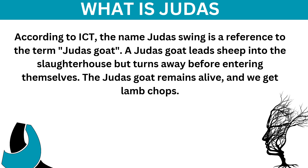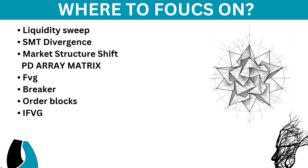A Judas goat leads sheep into a slaughterhouse but turns away before entering itself — the Judas goat remains alive and we get lamb chops. It means the Judas goat is so manipulative, so intelligent, that it will not let you achieve what you want to achieve.